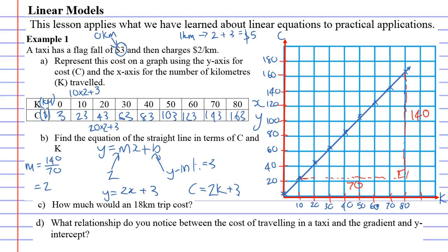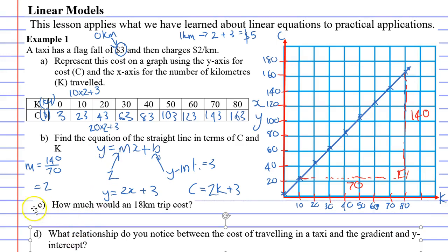Now let's move on to question C, which says, how much would an 18-kilometer trip cost? Using our formula, C equals 2K plus 3, we've traveled 18 kilometers, so we're going to replace the K with the number 18. 2 times 18 plus 3 is going to be 39. This is in terms of cost, so $39.